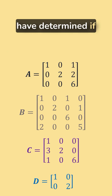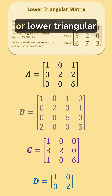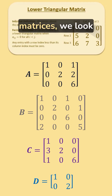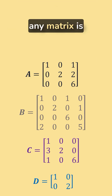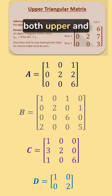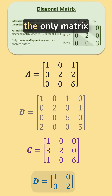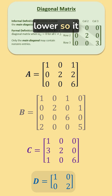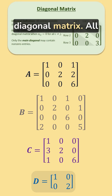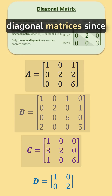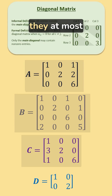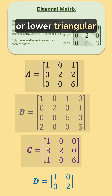Now that we have determined if any of these matrices are upper or lower triangular matrices, we look to see if any matrix is both upper and lower triangular to find our diagonal matrices. This is the only matrix that is both upper and lower triangular, so it is the only diagonal matrix. All of the other ones are not diagonal matrices since they at most only satisfy one of the upper or lower triangular conditions.